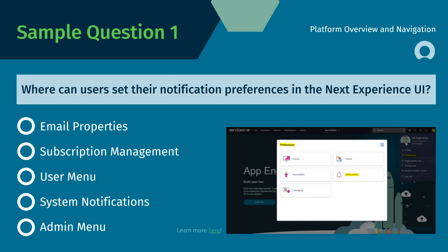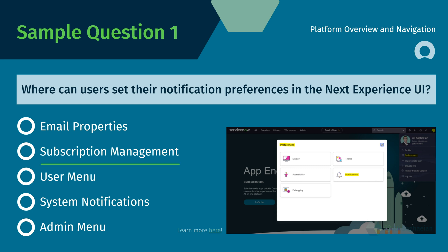Here is a sample question about the Next Experience Unified Navigation. Where can users set their notification preferences in the Next Experience UI? The options are Email Properties, Subscription Management, User Menu, System Notifications, and Admin Menu.